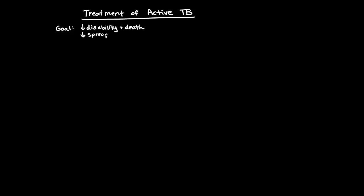The good news about the treatment of active TB infection is that we have a number of drugs which have been developed over time that are really quite effective at treating the infection. The bad news is that unlike many infectious diseases, these drugs have to be given for a fairly long period of time. They usually have to be given in combination, so you need multiple drugs to be effective. The other bad news is that resistance among strains of tuberculosis is becoming a problem globally.